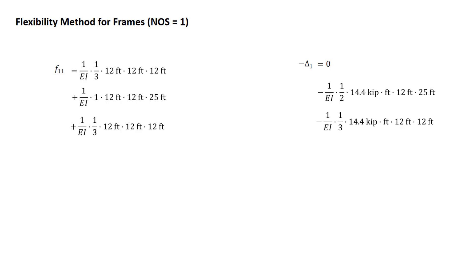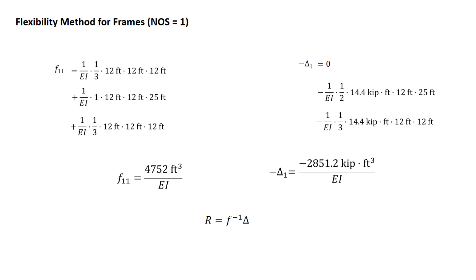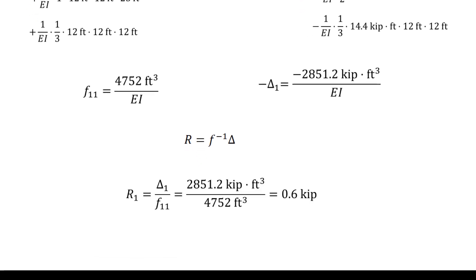I'm leaving E and I out in this particular case because it's the same for all members, so I know it's going to cancel — no need to plug in. We do the multiplication and get the values shown. Our flexibility relationship says R is equal to F inverse delta, which means R1 is equal to delta 1 over F11. Since NOS is 1, we have scalars, so the inverse is simply the reciprocal. Plugging in the values, the EIs cancel, and we get R1 equal to 0.6 kips.